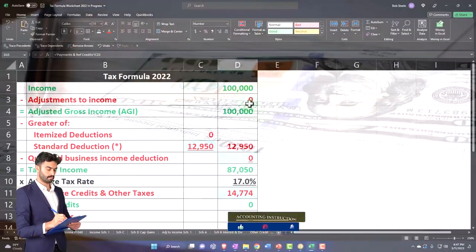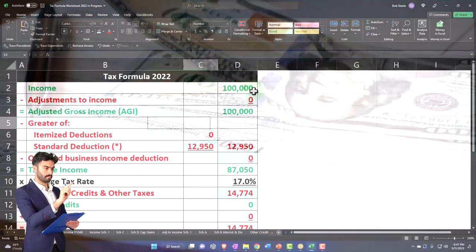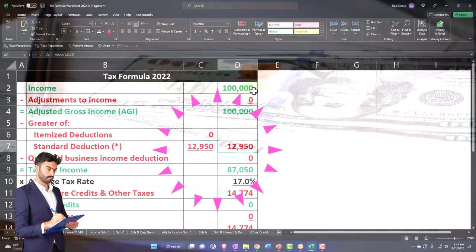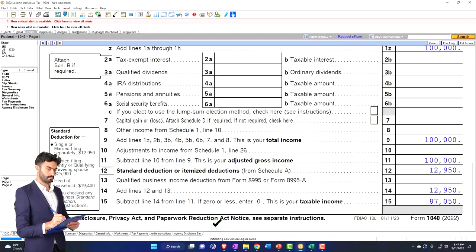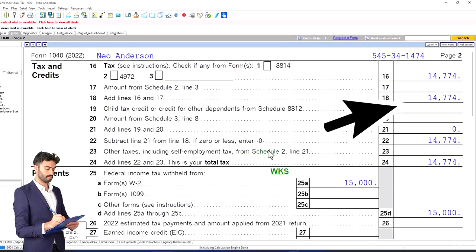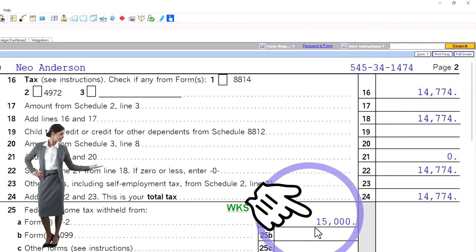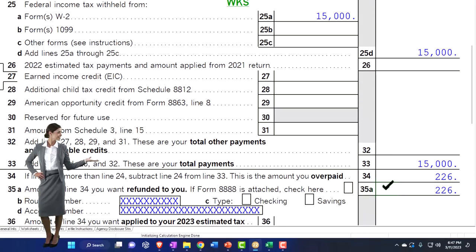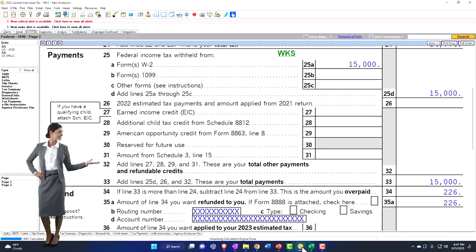We're mirroring that in our formula in Excel: $100,000, minus $12,950 equals $87,050. And then the software doing the calculation on page 2: $14,774 tax, $15,000 withholding gets us to the bottom line of $226 refund. So there is our mirroring of that.